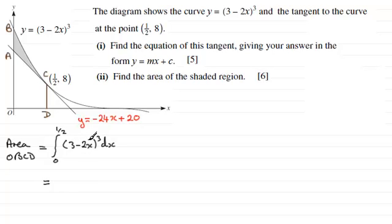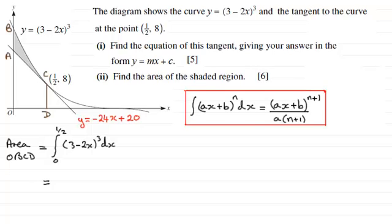Now to integrate anything of this form, a linear function here to a power, then we should be familiar with this result. That Ax plus b to the power n integrated with respect to x is equal to that linear function Ax plus b, but raised to the power n plus 1. And then we divide by that new power n plus 1, and we also divide by the coefficient of x, which in this case is a.